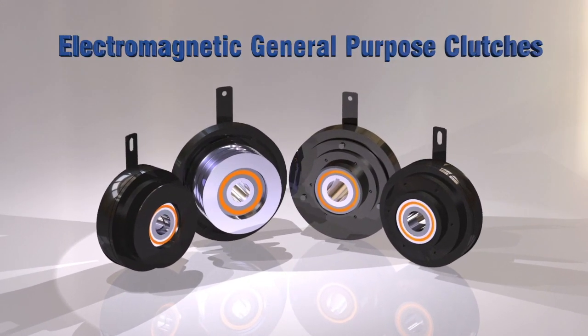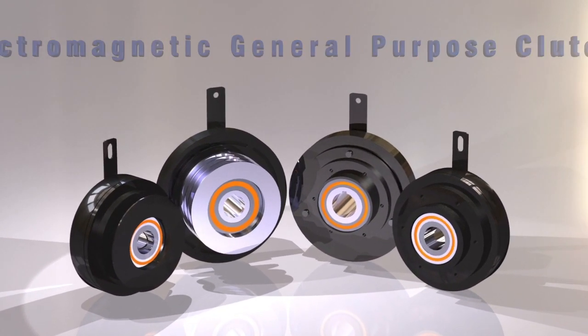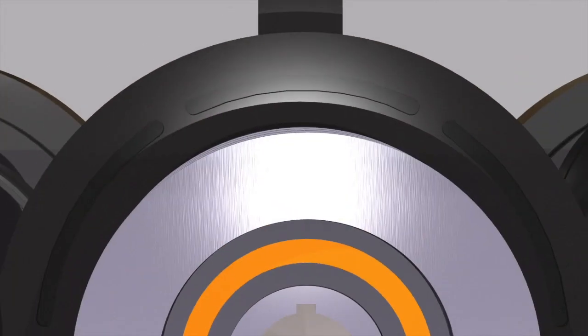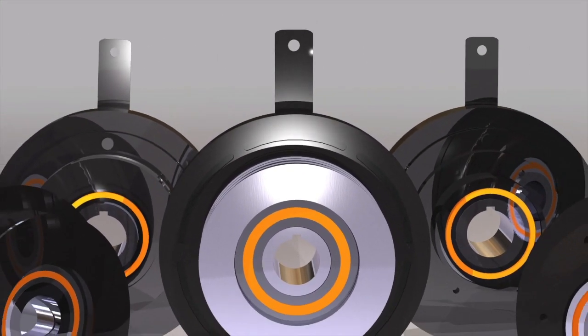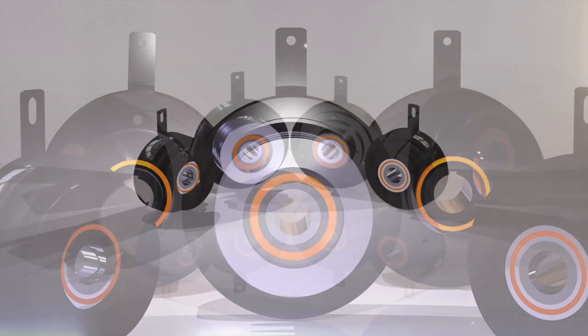Electromagnetic General Purpose Clutches. Ogura's general purpose clutches are extremely versatile. They are used in applications from automotive to industrial machinery.